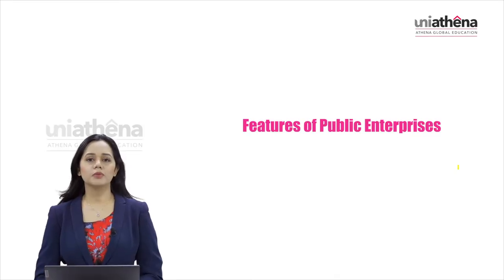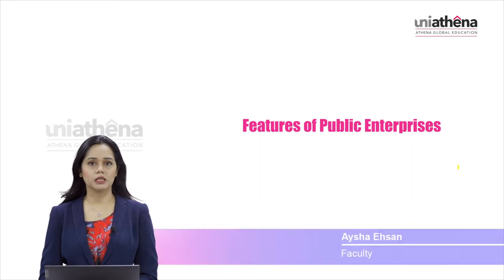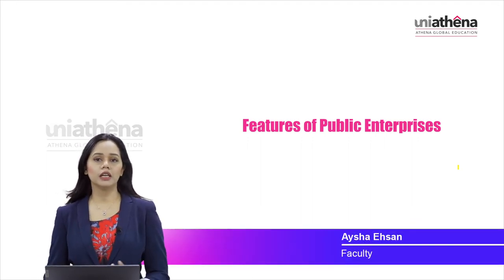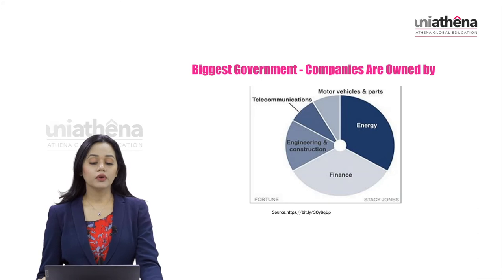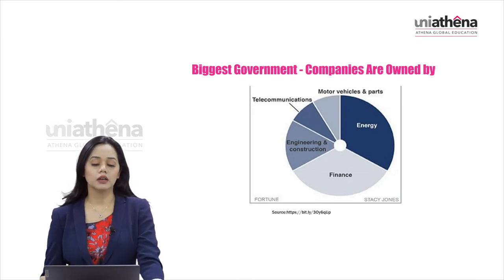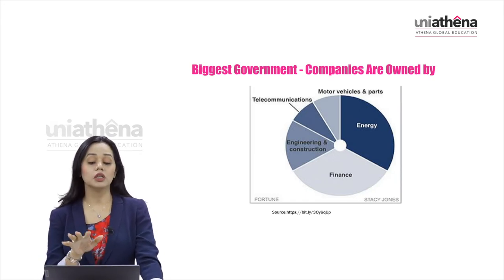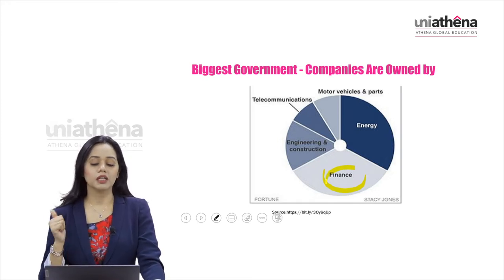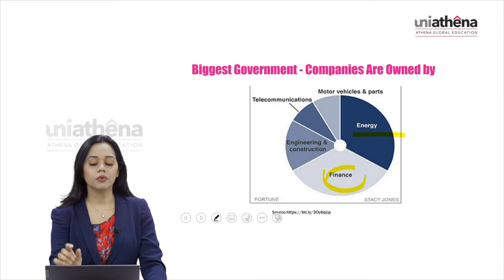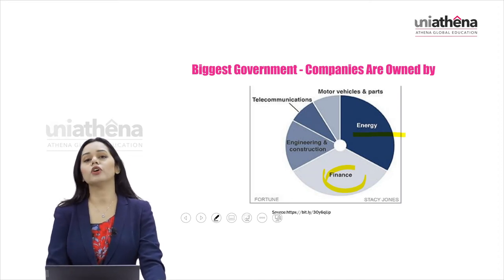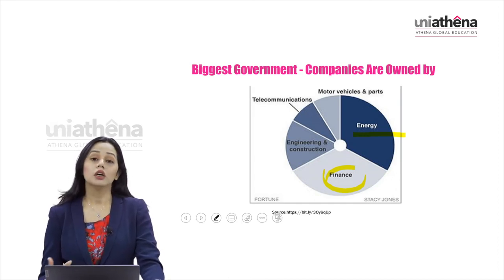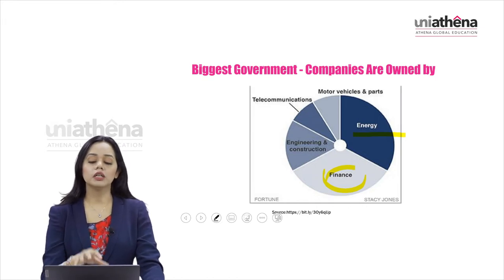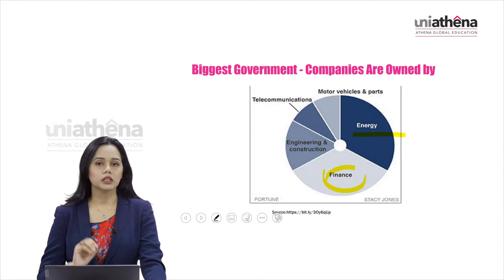Welcome to the lessons of public enterprise management. We're going to study the features of public enterprises — what are the different features common to any public enterprise so that you can identify how they differ from the private sector. The biggest government-owned companies fall under finance, which is the major chunk in any economy, followed by energy. Motor vehicles and parts, telecommunication, and engineering and construction are more privatized, but finance and energy mostly fall under the government sector.